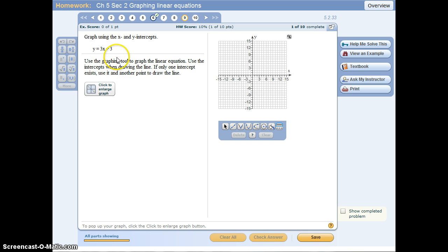The y-intercept is where x equals 0, so I set this x equal to 0. 3 times 0 is 0, so I get y equals 3. My y-intercept will be right here, at 3 on the y-axis.